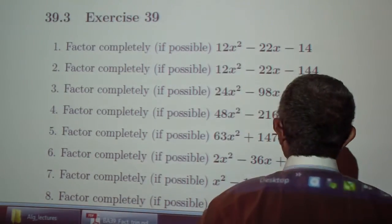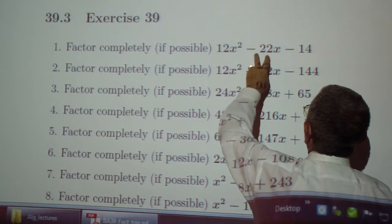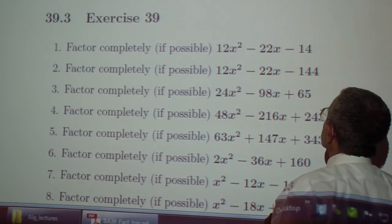Exercises. Factor completely if possible: 12x squared minus 22x minus 14.